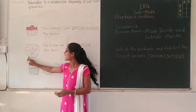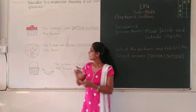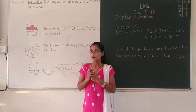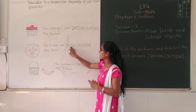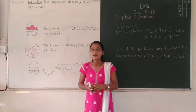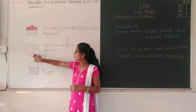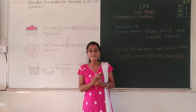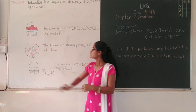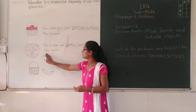Next, look at the second picture. I have drawn one bowl. And in the bowl, there are so many fishes. This is one bowl and there are so many fishes inside it. Now, are the fishes inside or outside the bowl? Inside the bowl, right? So you have to pick only the correct option — fishes are inside the bowl.